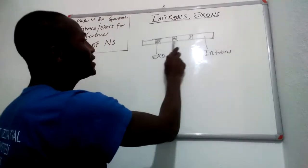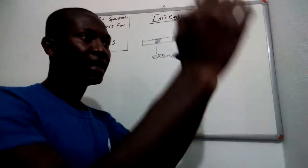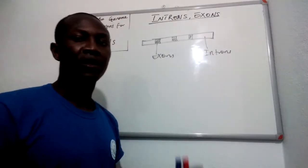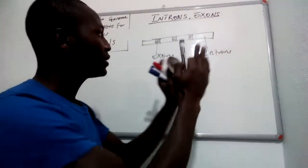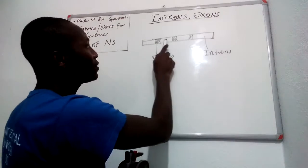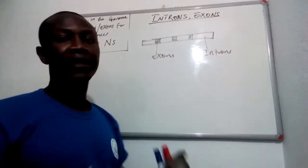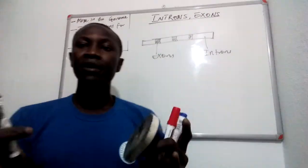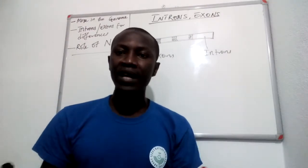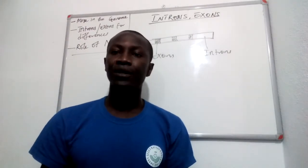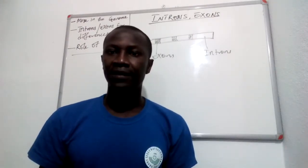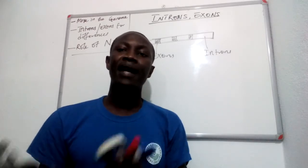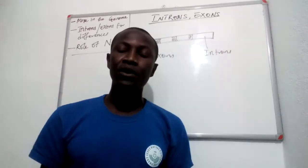In this example we show only three exons and about four introns — this is just for illustration. In reality, the numbers of exons and introns in our genome are different: we have more introns in our genome than exons.